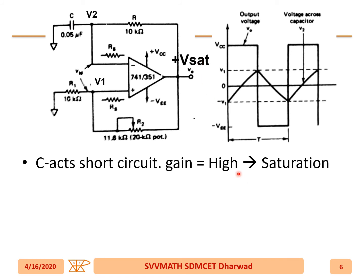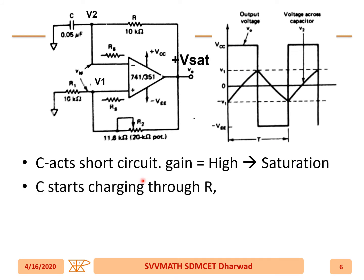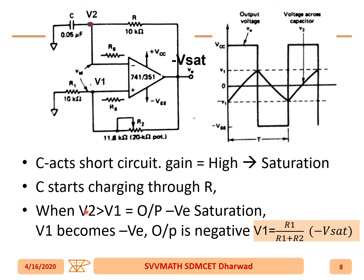Let us assume the output is at +Vsat, near Vcc — the output of the operational amplifier. Now the capacitor starts charging from 0 towards +Vsat. When V2 becomes greater than V1, and since this is the inverting terminal, the output will become what? Minus Vsat. You get the output as -Vsat.